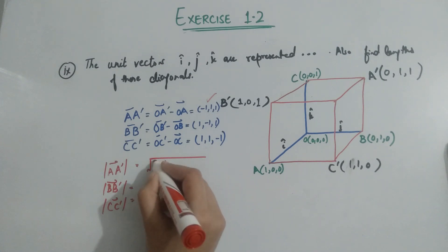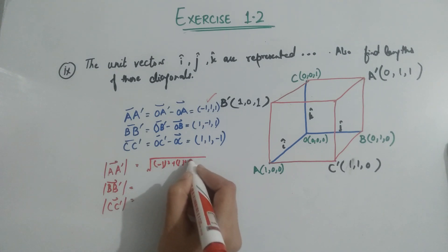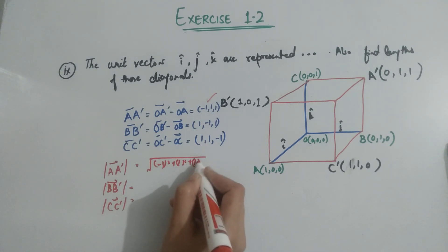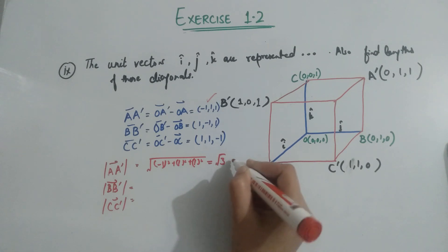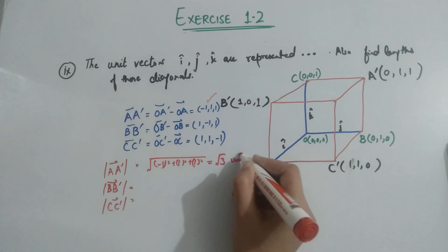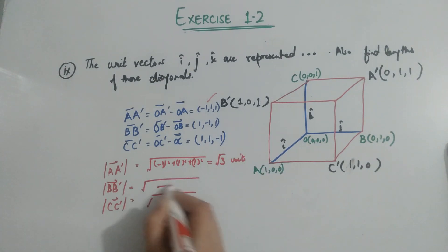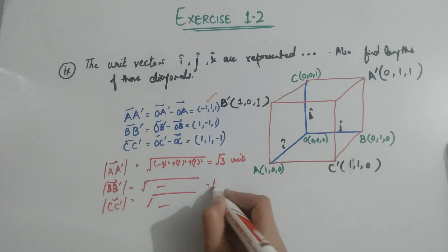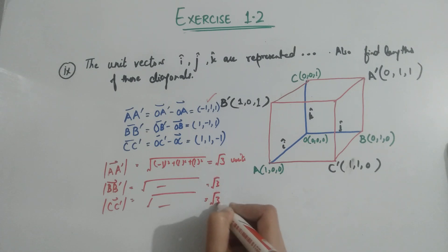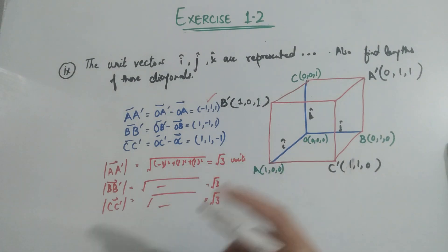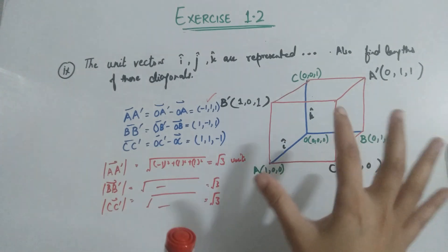The magnitude calculation gives the square root of (minus 1 squared plus 1 squared plus 1 squared), which equals square root of 3 units. If you solve the other diagonals, the answer is also square root 3 for each, because this is a cube and all side lengths are the same.